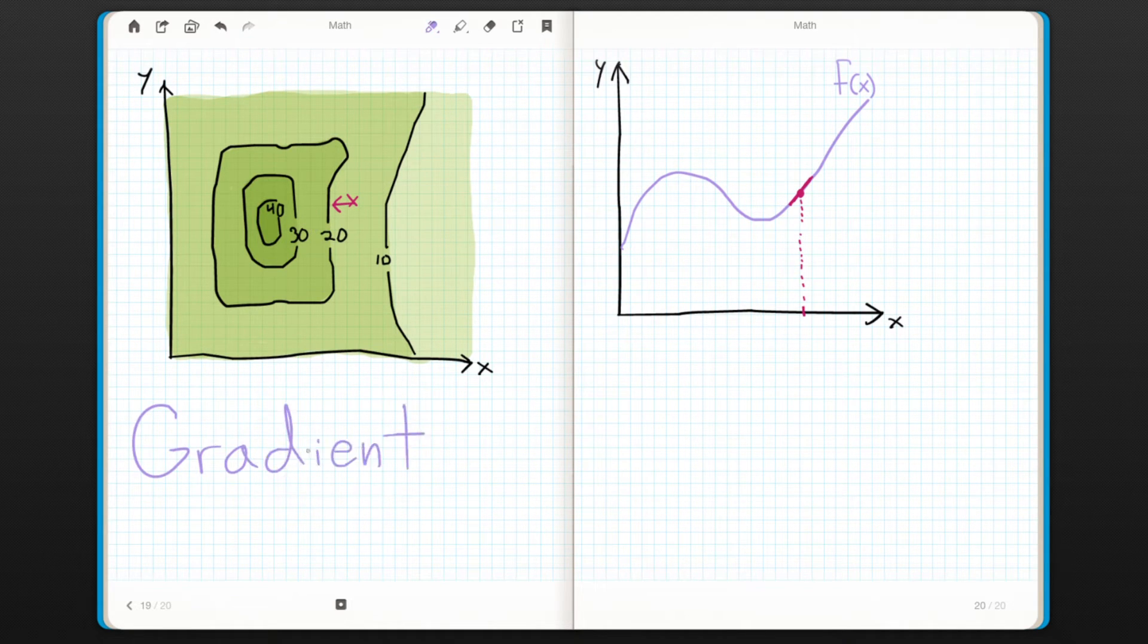So we'll use something called the gradient, which is a vector, not a scalar like the derivative. As a vector, it has a magnitude and a direction, so it can tell us both how steep something is and what direction is the slope. The gradient always points uphill, in the direction where the function is increasing the fastest, and its magnitude is the slope of the function in that direction.